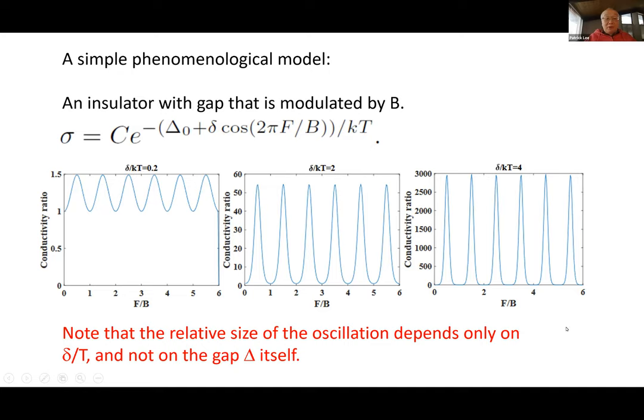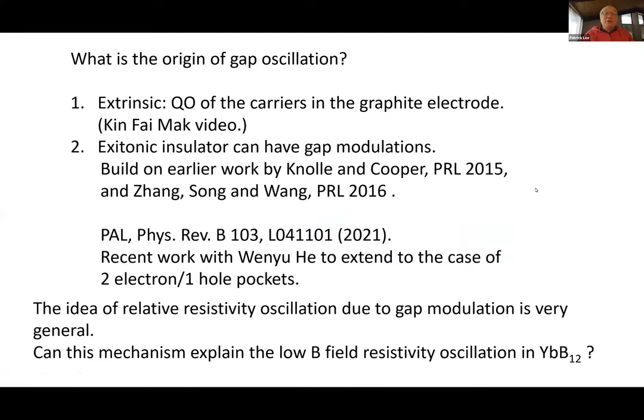The absolute values of course are dying very quickly, but the ratio can show very strong oscillation. So that's a very simple observation. Nowadays we all understand the power of exponential growth, even people on the street. The thesis is then simply that if there's a gap of some unknown origin and the gap is oscillating with field, then you can see small oscillations when temperature is high and even enormous quantized-looking oscillations when temperature is low.